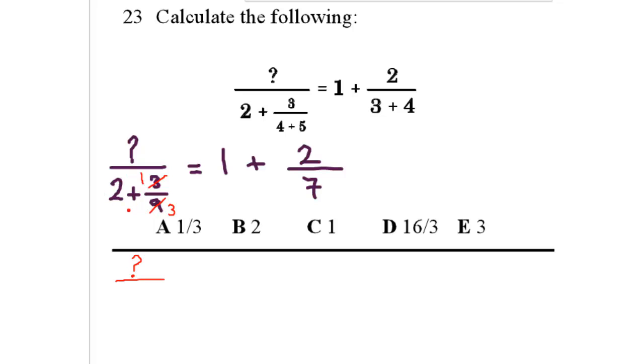As we said before, always change added fractions or mixed numbers into improper fractions. So 2 plus 1 third is the same as saying 2 and 1 third. So 2 times 3 is 6, 6 plus 1 is 7, so it becomes 7 over 3 equals 1 plus 2 over 7.